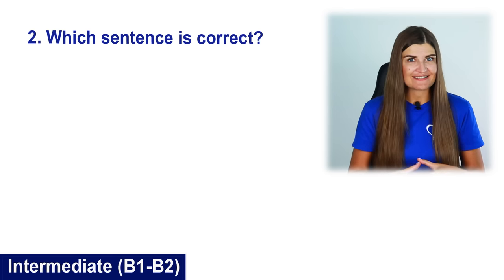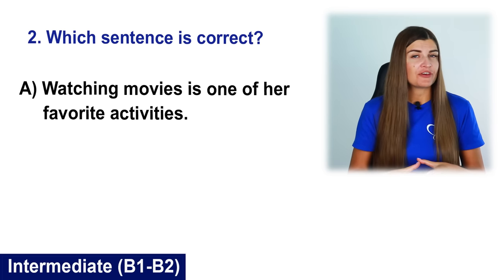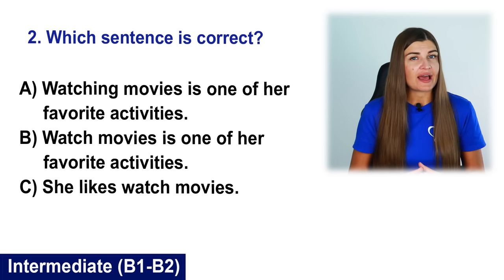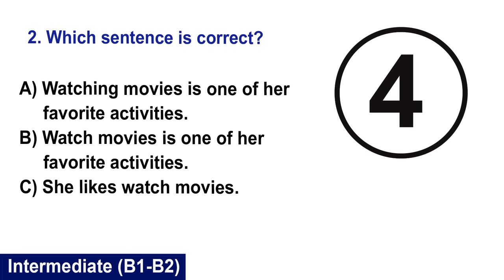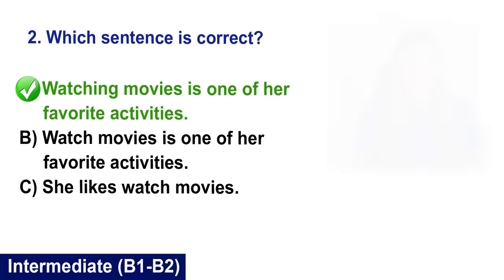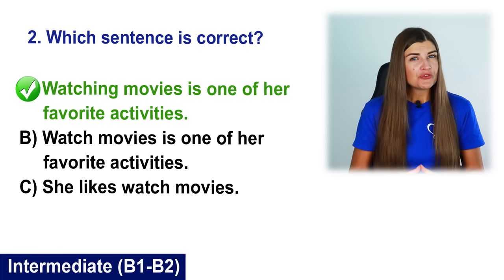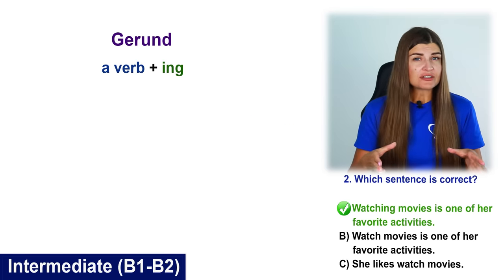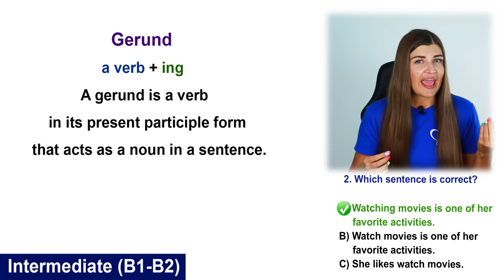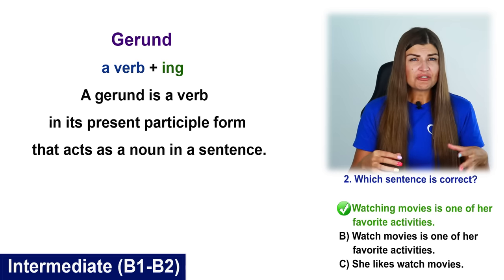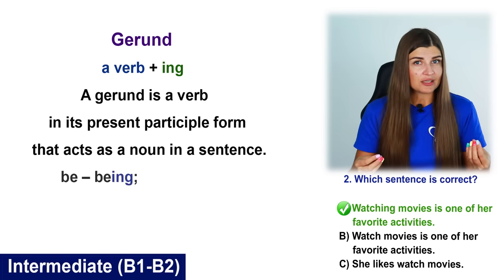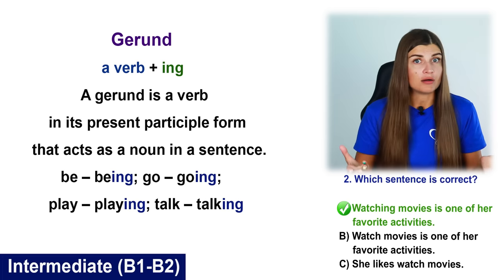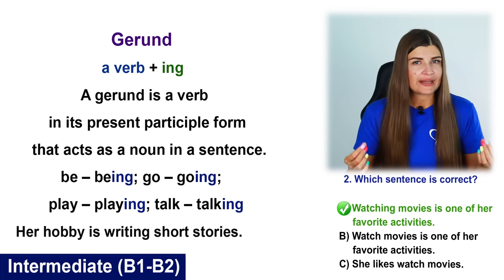Which sentence is correct? A. Watching movies is one of her favorite activities. B. Watch movies is one of her favorite activities. C. She likes watch movies. The correct sentence is A. Option A uses the gerund watching. A gerund is a verb in its present participle form that acts as a noun in a sentence. Gerunds are formed from verbs by adding -ing: go — going, play — playing, talk — talking. For example, her hobby is writing short stories.